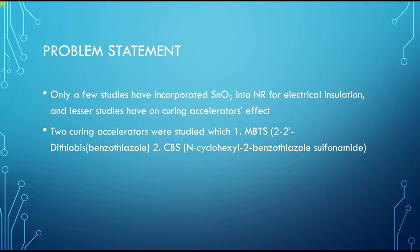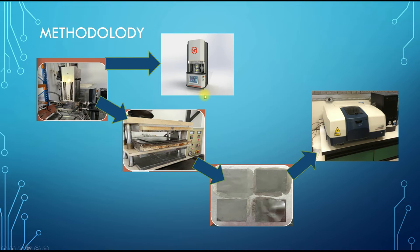There have been a few studies that incorporated tin dioxide into natural rubber for electrical insulation, but lesser studies have focused on curing accelerators' effects. The two accelerators we chose to study are MBTS, which is 2,2-dithiobis-benzothiazole, and CBS, which is N-cyclohexyl-2-benzothiazole sulfonamide.